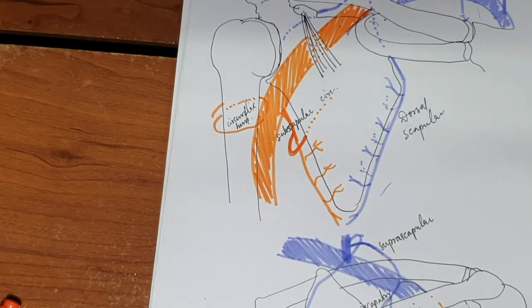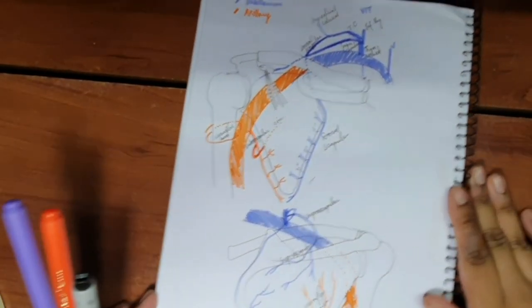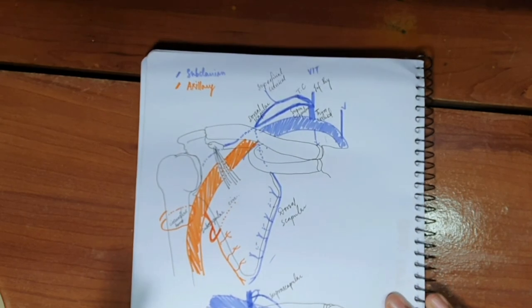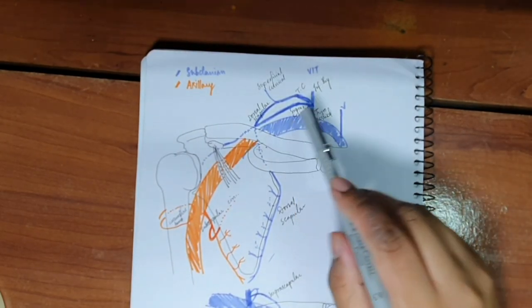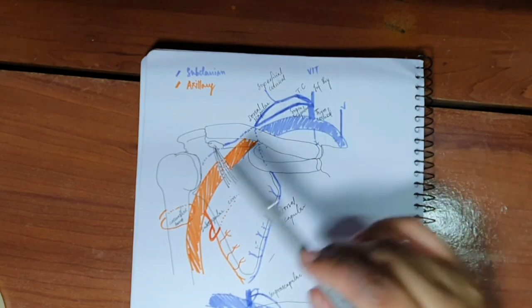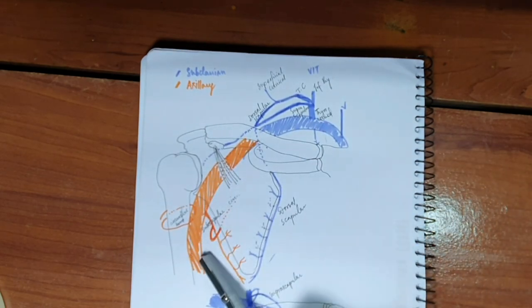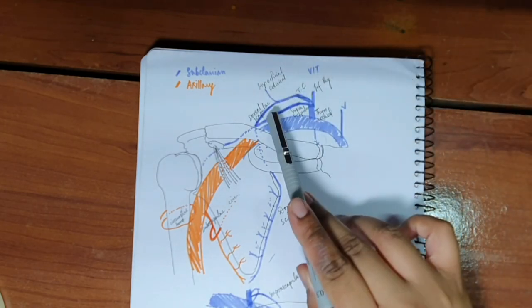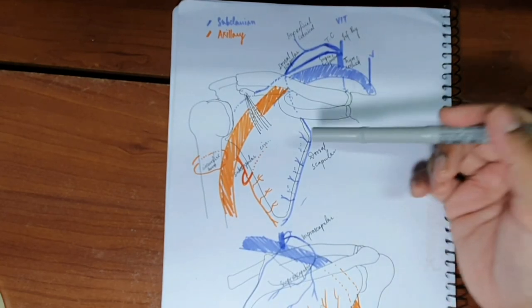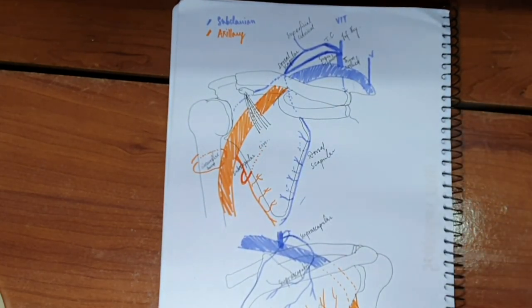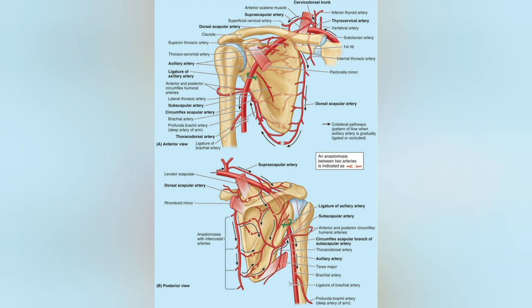This is your scapular anastomosis. The first part of the subclavian artery and the third part of the axillary artery are involved. The major vessels are the dorsal scapular, the suprascapular, and the subscapular artery. That was all about the scapular anastomosis. A clearer reference picture is attached. Thank you for watching — please like and leave comments about how I can improve the quality of the videos.